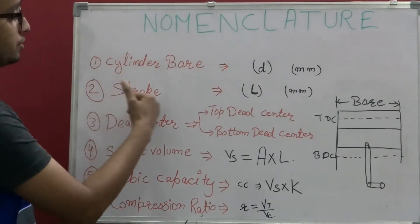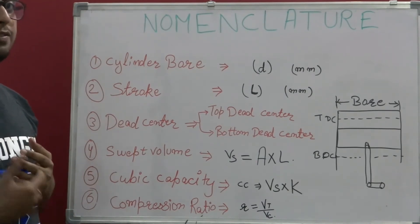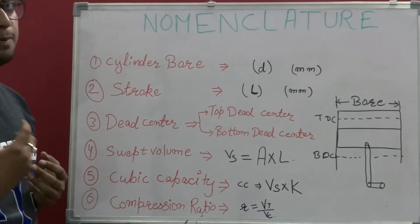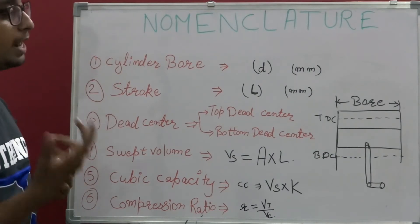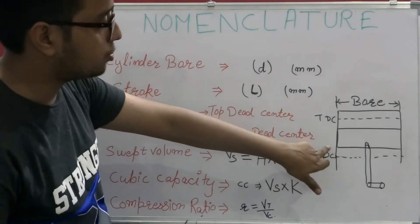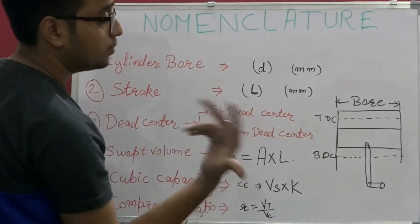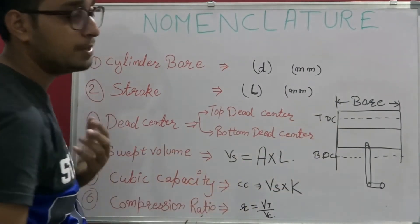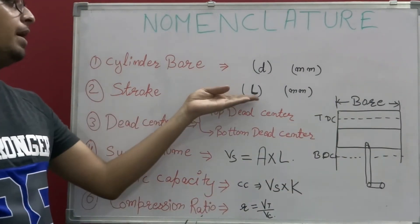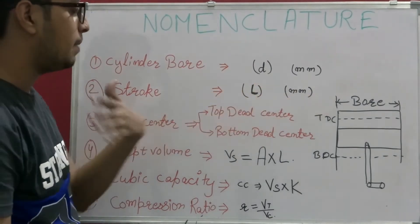After that we have stroke. Stroke helps us in knowing the movement of a piston from BDC to TDC and helps us in knowing at what time it will be at TDC and BDC respectively. Basically the stroke is the length between or the distance you can say between the TDC and BDC when the piston moves while it is working. It is designated by a capital L and expressed in mm.